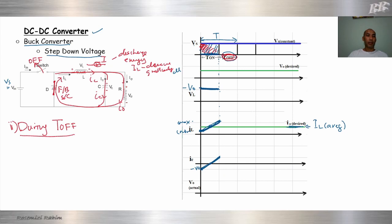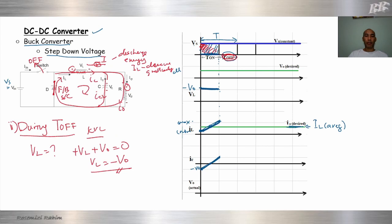What is VL during off period? By using KVL: plus VL plus V0 equals zero. So VL equals minus V0. Previously during on it was Vs minus V0, now during off VL equals minus V0 — meaning it is below the axis.